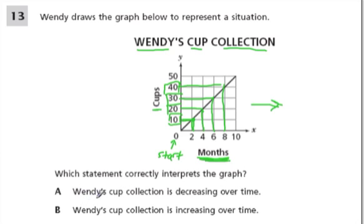So choice A says, Wendy's cup collection is decreasing over time. Well when you see over time, what we're implying is that as time increases. So basically, whatever starting point we're at, months later, over time, what happens?